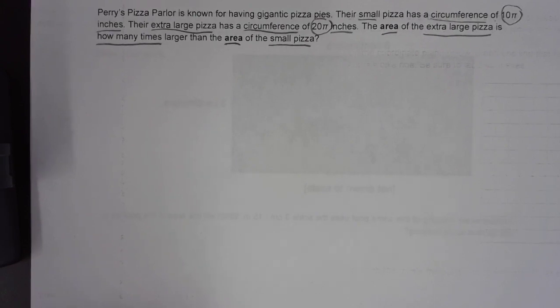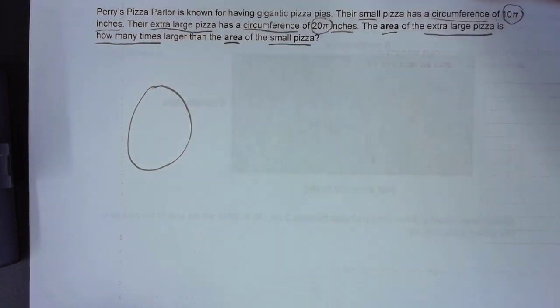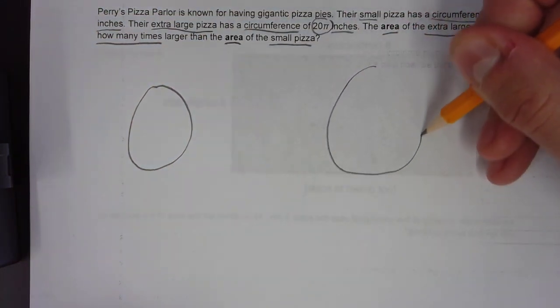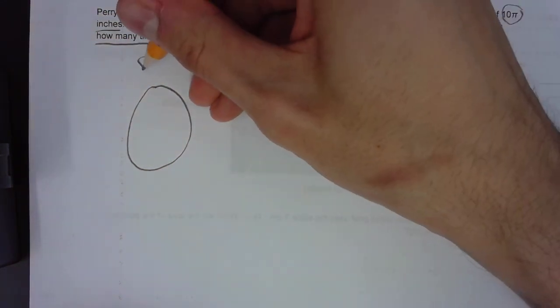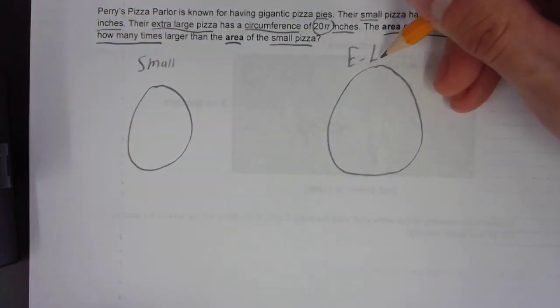To do this problem, you're going to want to draw a couple of diagrams to help represent your different types of pizza. I want to start off with two circles, one bigger than the other. This will be the small. This one will be my extra-large.